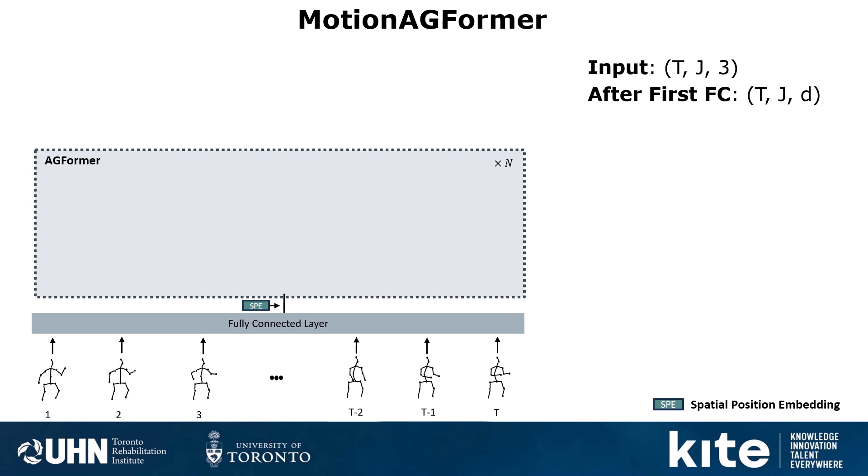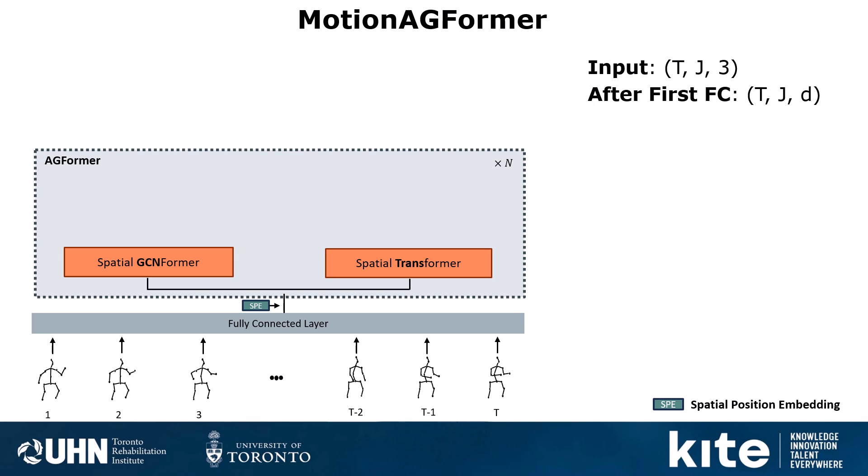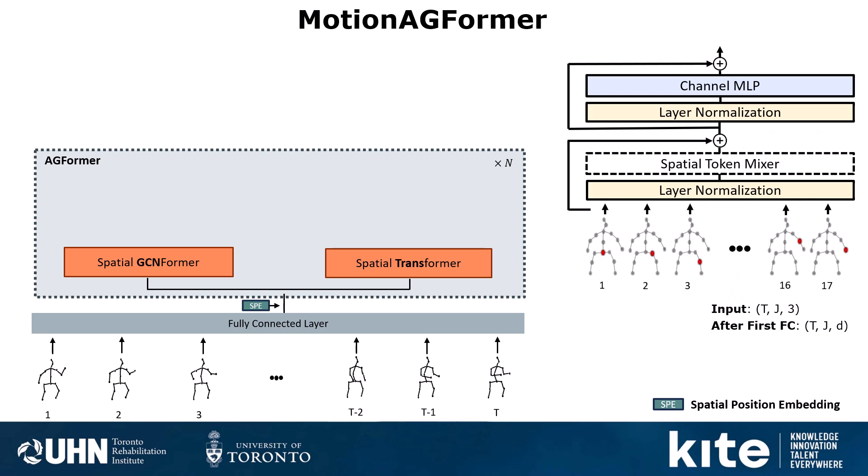In the AGFormer block, we have two streams. In one stream we use GCNFormers, and in the other stream we use Transformers. Similar to previous approaches, we have Spatial Modules first. Spatial MetaFormer in general receives different keypoints of the human body as different tokens, and different frames are considered as different batches of data. So Spatial MetaFormer is responsible for extracting intra-frame relationships between joints.